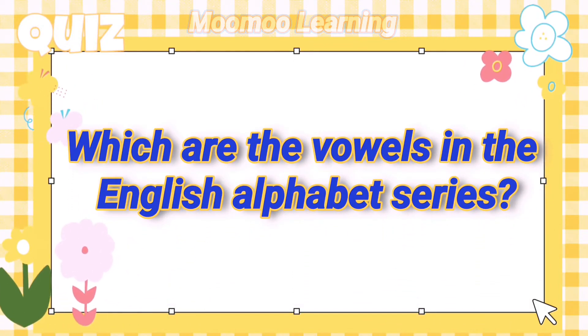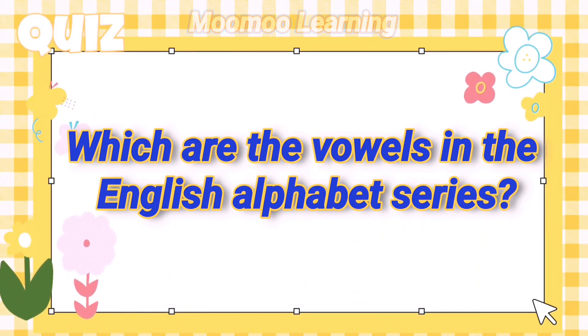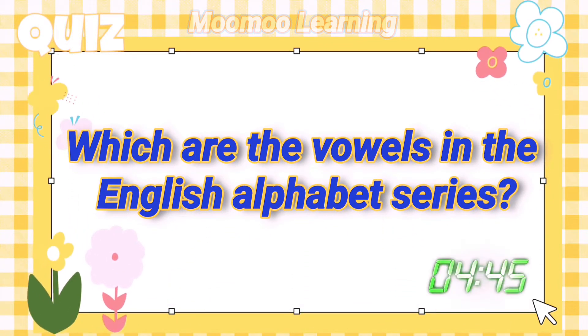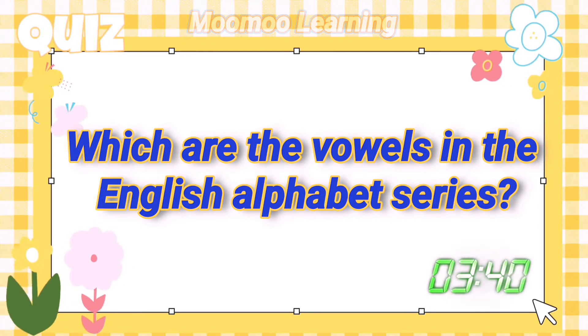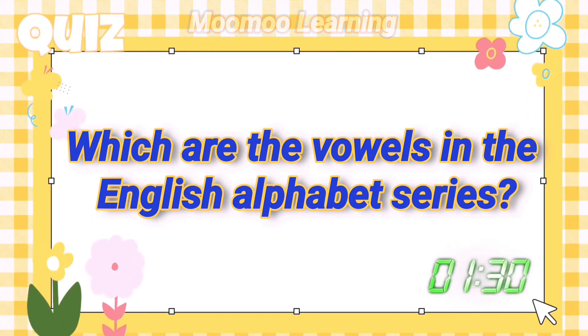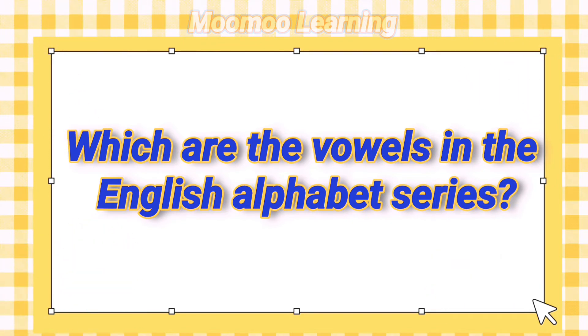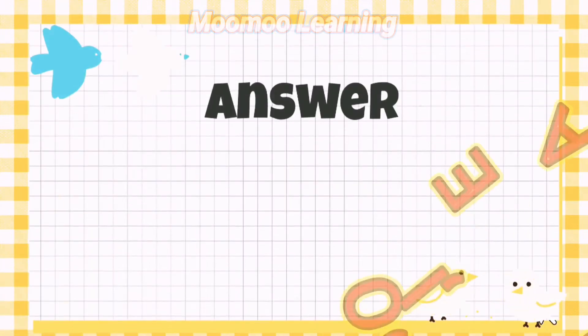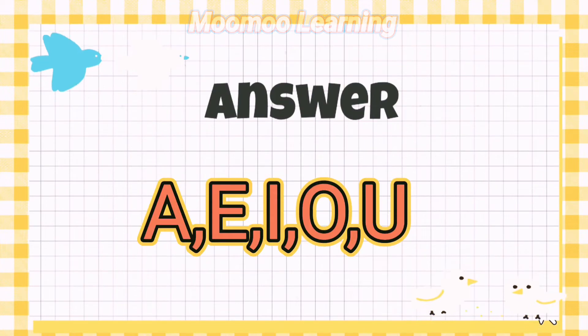Which are the vowels in the English alphabet? Answer: A, E, I, O, U.